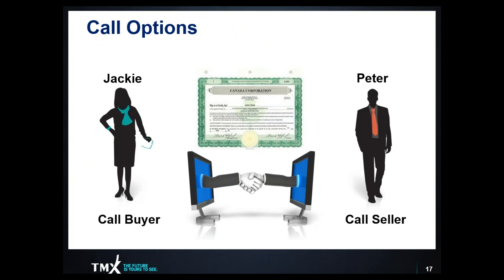Recognize that there is somebody on the other side of that transaction — the call option buyer. The great thing about the markets is you have many different traders and investors using positions to meet their own independent objectives. Jackie as the call buyer may think stock XYZ is going to go up significantly within the next 7 months and wants to buy the call as a stock replacement strategy. Peter as the option writer is looking to generate cash flow, perhaps bought shares at $8, thinks they've done well, and wants to generate income while targeting $13 as an upside exit — two investors coming together to make a deal.